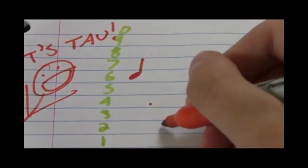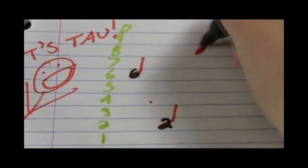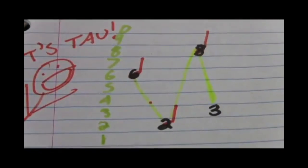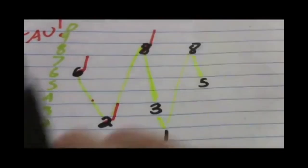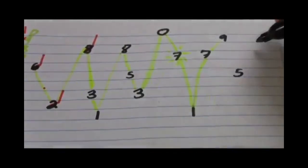It's tau, 6, 1, 2, 8, yeah, it's tau, 6, 1, 2, 8, 3, 2, 8, 5, 3, 0, 7, 1, 2, 9, 5, 8